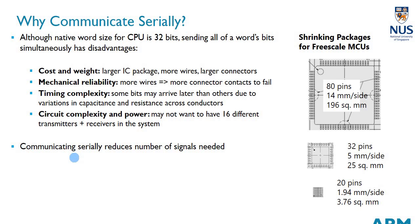The first thing to address is motivation: why communicate serially? Our microcontroller or CPU is 32 bits, meaning it can deal with 32 bits of data at a time. Of course, not all data will be 32 bits — some can be 8 bits or 16 bits, depending on what we're dealing with.